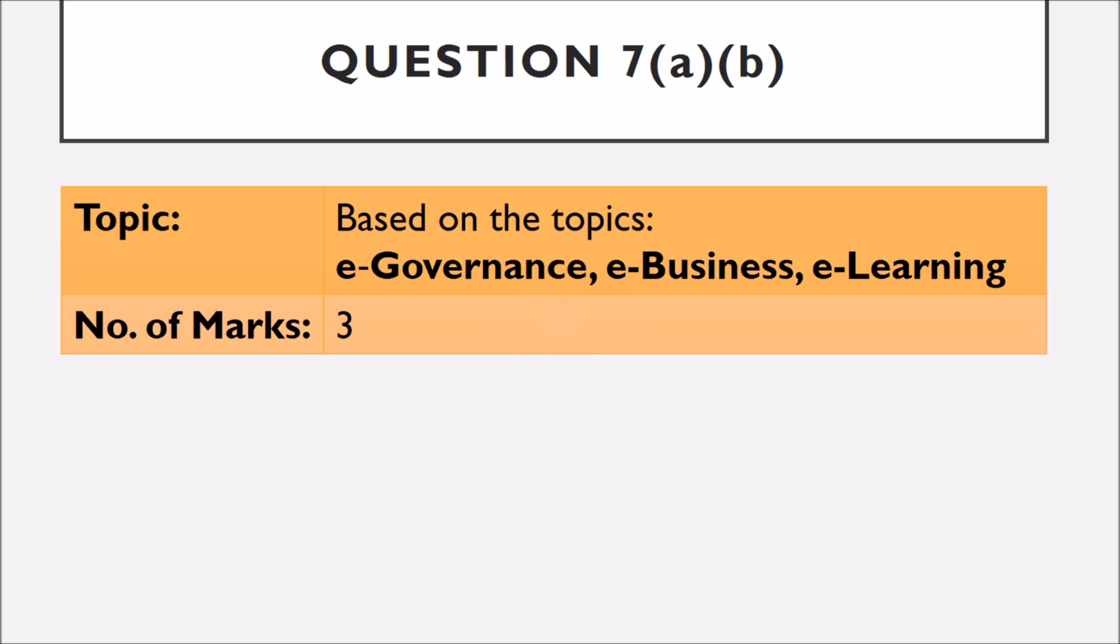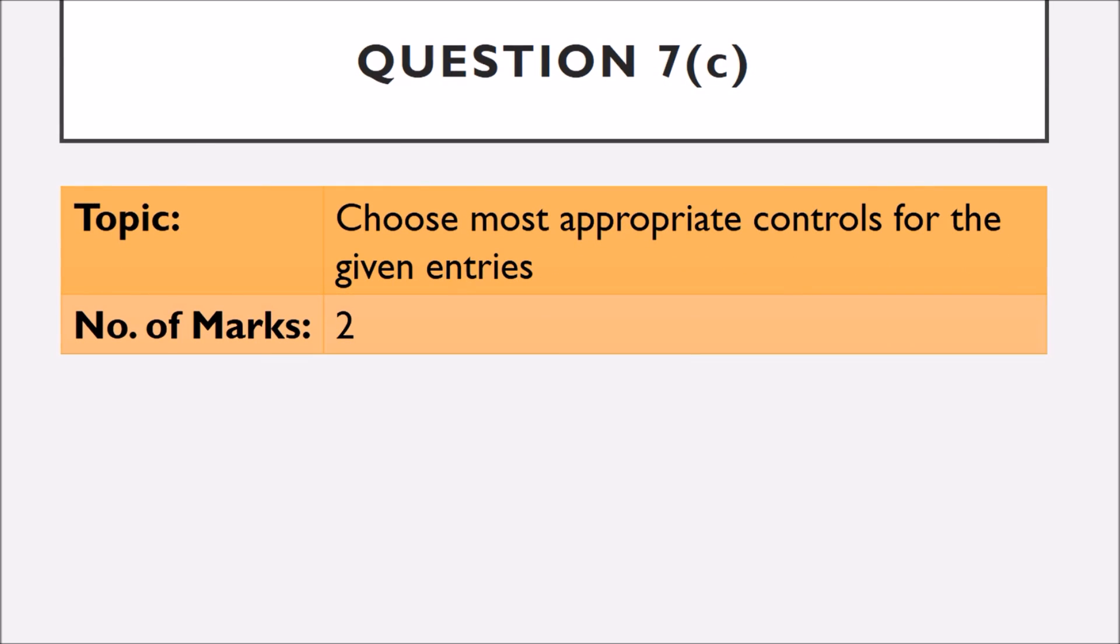Question number 7 A and B, they are based on the topics E-Governance, E-Business and E-Learning and they are of 3 marks. In question number 7 C, you have to choose the most appropriate control for the given entries and it is of 2 marks. There are 4 parts and each part is of half mark each.